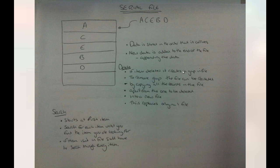If we want to delete an item, it will create a gap in the file. Say we deleted E — that would create a gap. So to do a deletion, instead of just deleting E, we copy all the records apart from the one to be deleted into a new file. We'd copy A and C, ignore E, then copy B and D into the new file. That new file then replaces the original file.